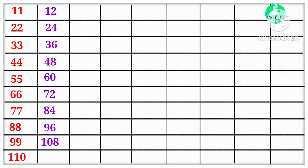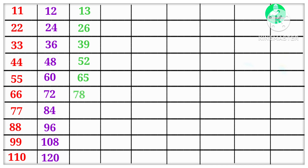12 9s are 108, 12 10s are 120. 13 1s are 13, 13 2s are 26, 13 3s are 39, 13 4s are 52, 13 5s are 65, 13 6s are 78, 13 7s are 91, 13 8s are 104.